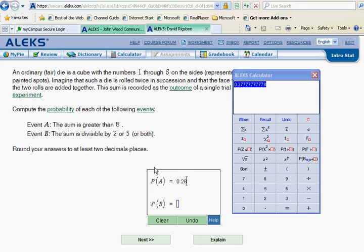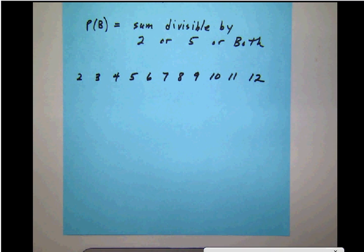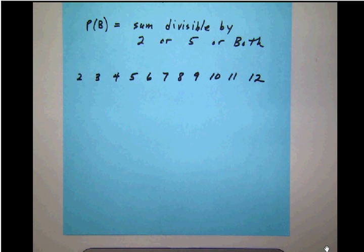Now, as we get to our second answer, we want the sum to be divisible by 2 or 5 or both. So let's go back over here and take a look at our notes. Now they want us to calculate the probability that the sum of the two dice is divisible by 2 or 5 or both. So what I've done was basically to write out all the possible sums.